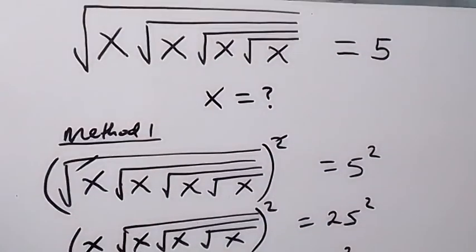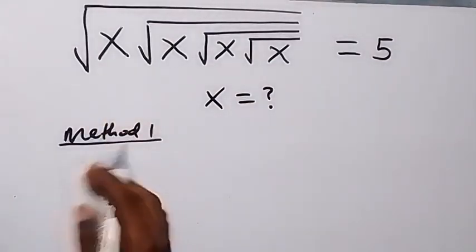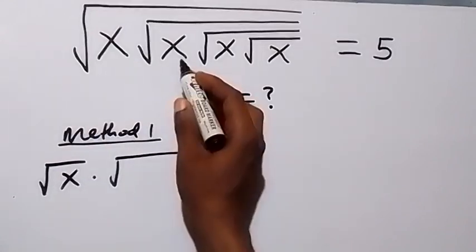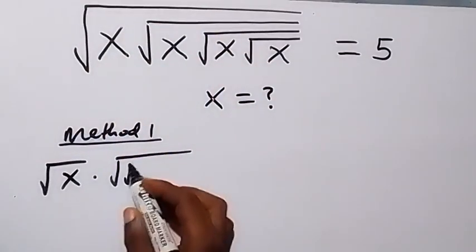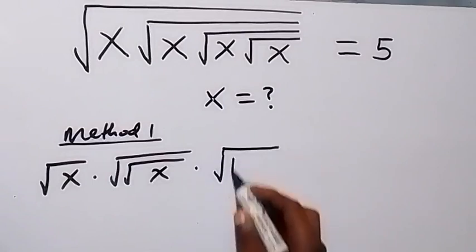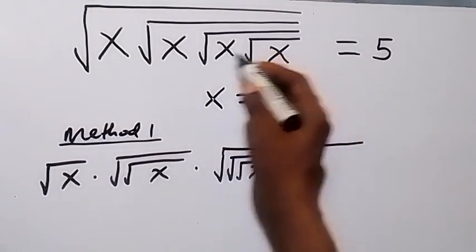From what we are given — square root of x, square root of x, square root of x, square root of x — we have four roots, equals 5. We can separate this: root x, times the second x which contains two roots so we have root of root x, times the third which has three roots so we have root of root of root x.